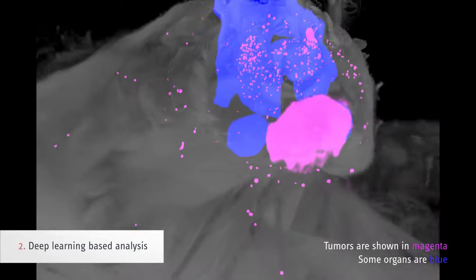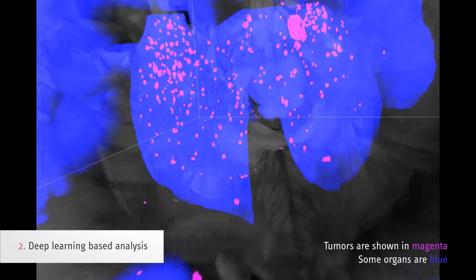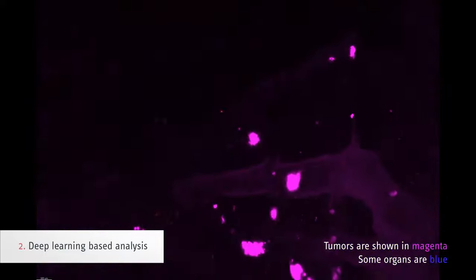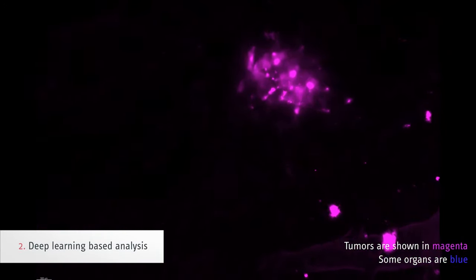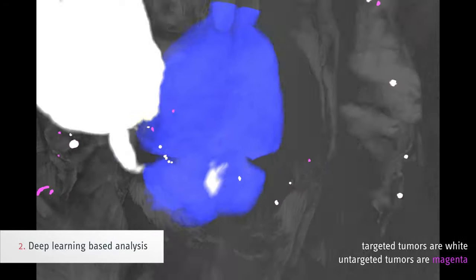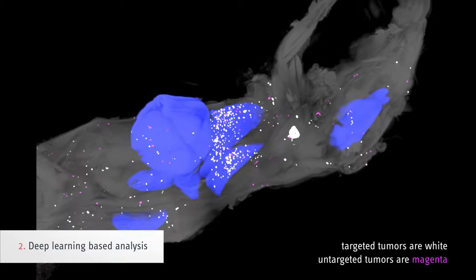Using this new technology, we successfully revealed hundreds of small metastases throughout the mouse body, which were not detectable by other methods. DeepMAC also enabled us to see exactly which cancer metastases were targeted by a drug candidate and which ones were missed.